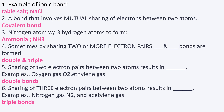Number four: sometimes by sharing two or more electron pairs, double and triple bonds are formed. Take note that 'two or more electron pairs' is highlighted — that gives you the clue that double and triple bonds are formed.